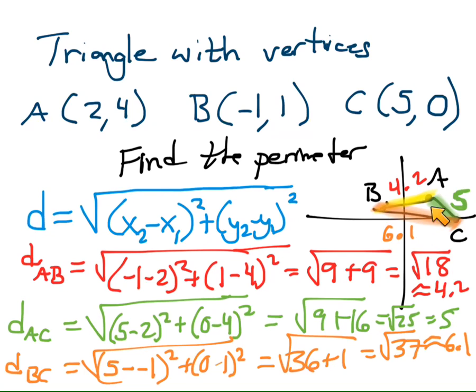So now I have all three sides of this triangle now finding the perimeter is really easy right. 6.1 plus 4.2 that's 10.3 plus 5, 15.3. It didn't tell me feet or inches so I'll just say 15.3 units.